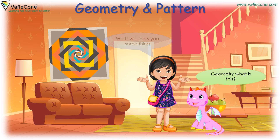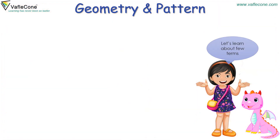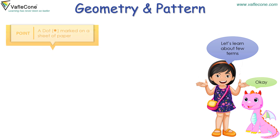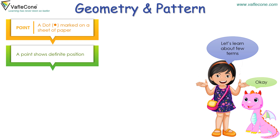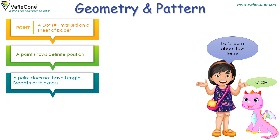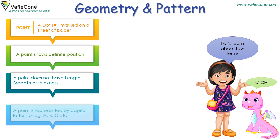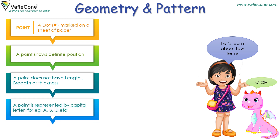Wait, I will show you something. Let's learn about a few terms. Point: a dot marked on a sheet of paper. A point shows a definite position. A point does not have length, breadth, or thickness. A point is represented by a capital letter — for example, A, B, C, etc.